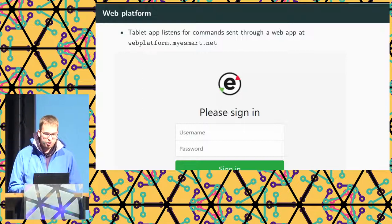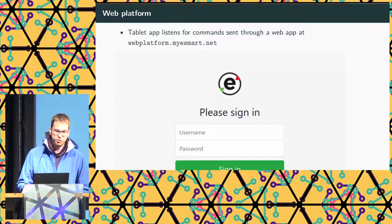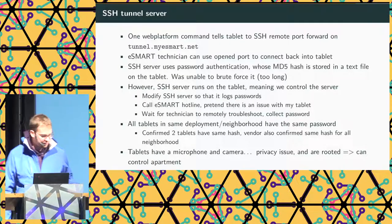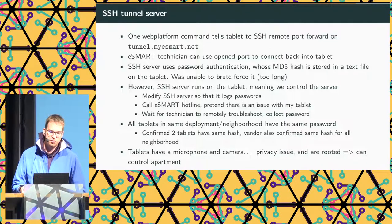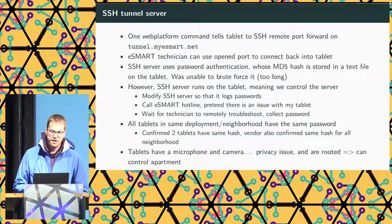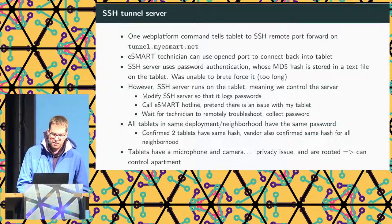The web platform I mentioned shows a login form and is used for sending commands and for the building agency to send messages to tenants. The tunnel server is just an SSH server for remote troubleshooting, and it uses password authentication with an MD5 hash of the password stored in a text file on the tablet. I tried to brute force it, but it appears to be a very long password, so that's not feasible even with MD5.